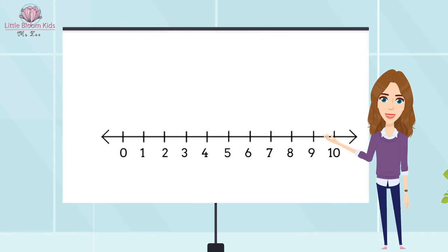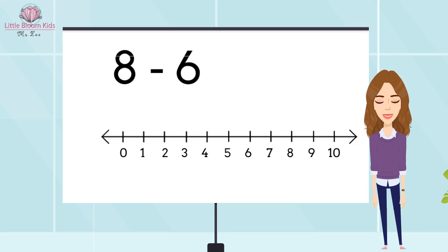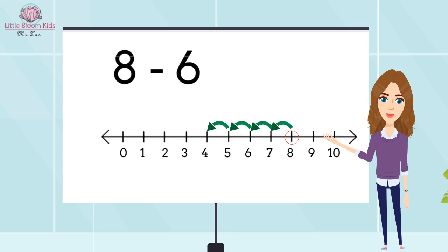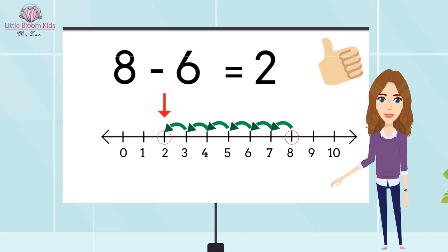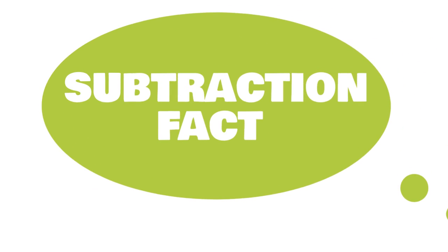Eight take away six, another example. So we're going to start from number eight, going backward six times. Remember, going backward. That's one, two, three, four, five, six. We landed at number two. That means our answer is two. So eight take away six equals two. Well done everyone, you mastered it.